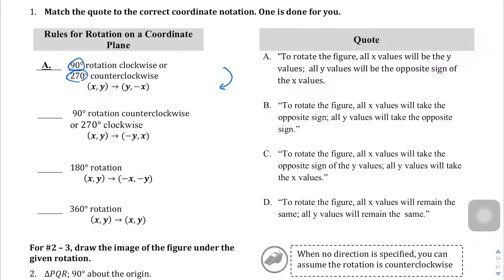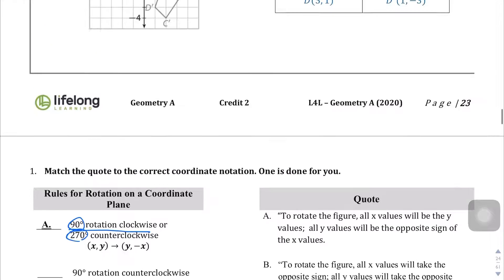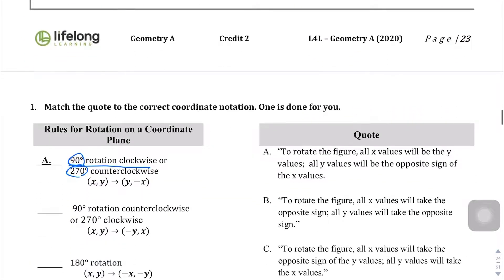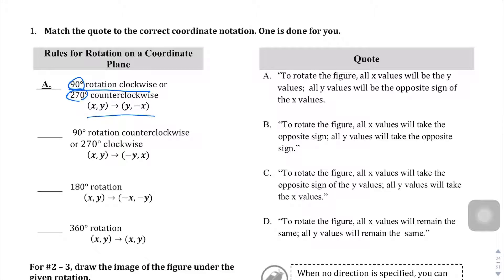That's why there are two different descriptions there. For 90 degrees clockwise, your (x, y) value is going to become (y, -x). And sure enough, what that looks like is: to rotate the figure, all x values will become y values, and all y values become the opposite sign of the x value. Take the time to read and figure out what each of these are saying.